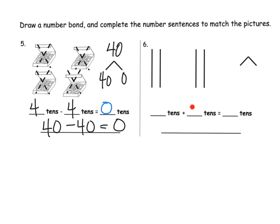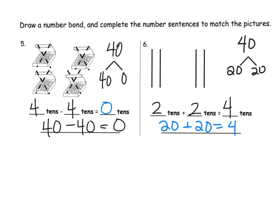This time it's an addition sentence. I see two quick 10s here and two quick 10s here, so two 10s plus two 10s equals four 10s, because 2 plus 2 is 4. Our number bond would show 40, 20, and 20. Our number sentence would be 20 plus 20 is equal to 40. Parents and teachers, for differentiation, students are more than welcome to write 40 is equal to 20 plus 20 — that is perfectly fine.